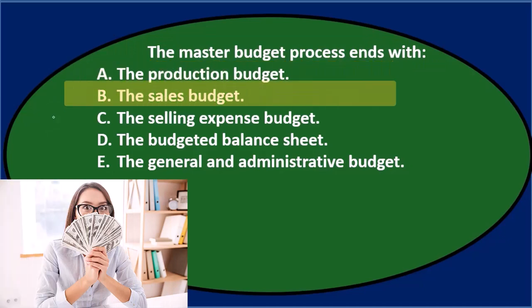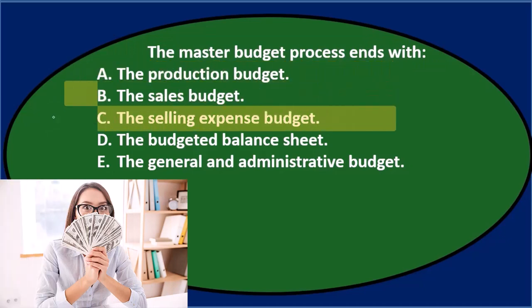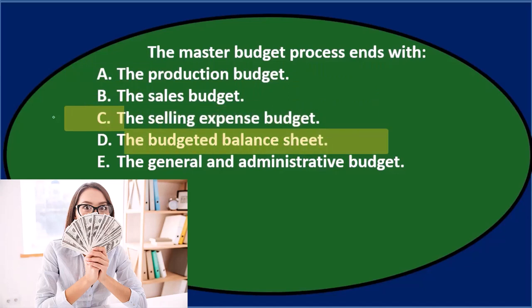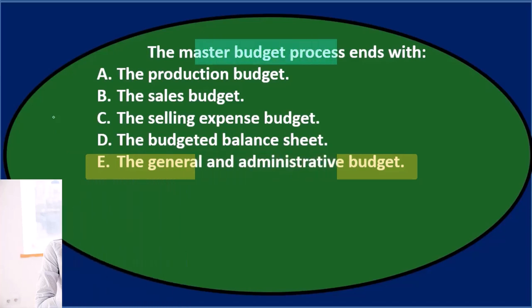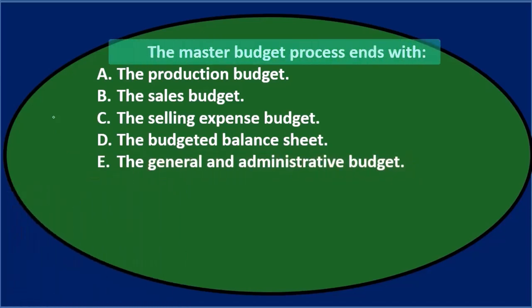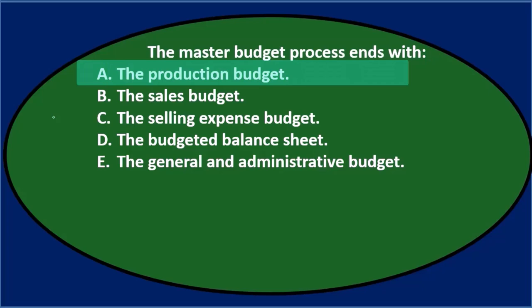Next question: the master budget process ends with A) the production budget, B) the sales budget, C) the selling expense budget, D) the budgeted balance sheet, or E) the general and administrative budget. Let's go through this using the process of elimination.